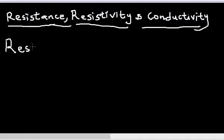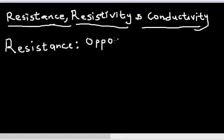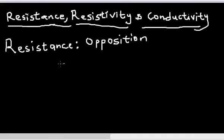Now, what is resistance in electricity? Electrical resistance is defined as the opposition to the flow of electrical current. Every material offers some sort of resistance to the flow of electrical current.